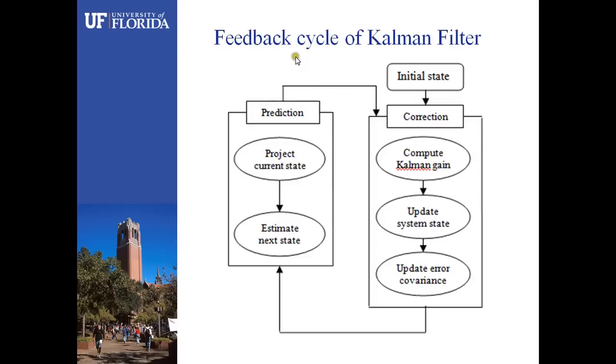Here we get feedback cycle of Kalman filter. There are three main parts in this structure. First of all is the initial state, then the correction part, including the compute Kalman gain, then update system state, and last update error covariance. The most important one, I think, is the prediction part, which consists of the project current state, then estimate next state.